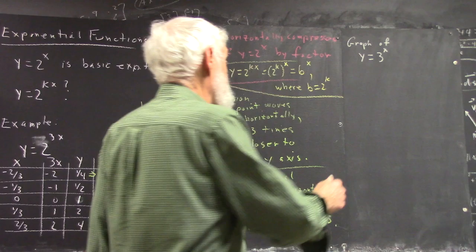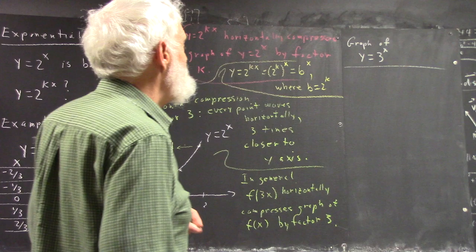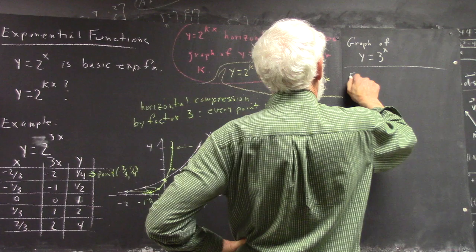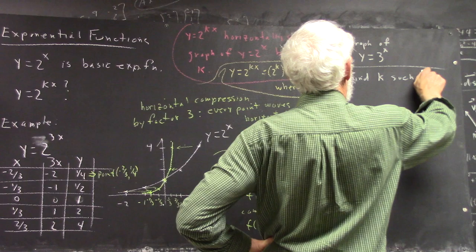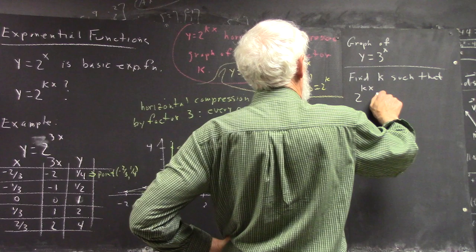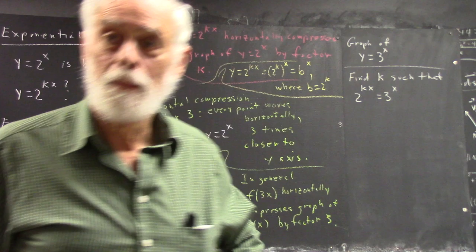Now, I don't understand what I just said, so let's just go ahead and do it and it will become a little bit clearer. So what I want to do is, okay, we want to find the k such that 2 to the kx equals 3 to the x.